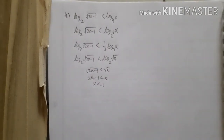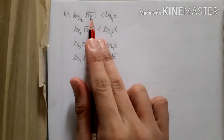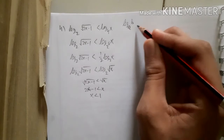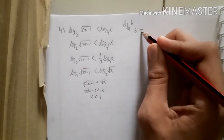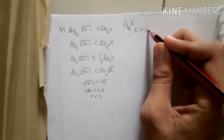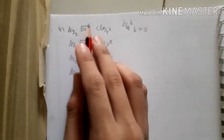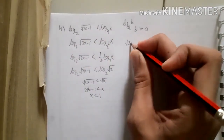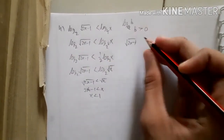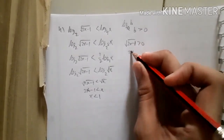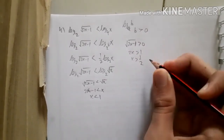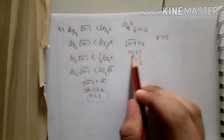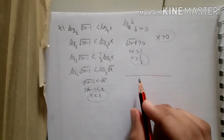We must also ensure the logarithm arguments are positive (logarithm of 0 or a negative number is undefined). So √(2x − 1) > 0 requires 2x > 1, meaning x > 1/2. Additionally, x > 0 must hold.